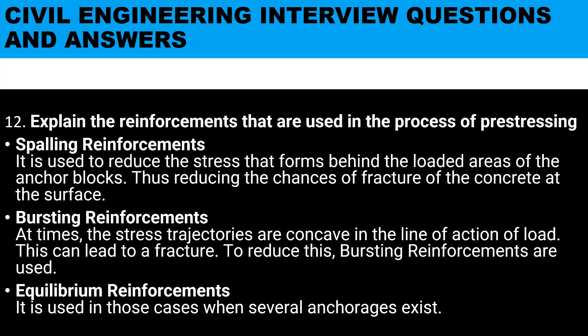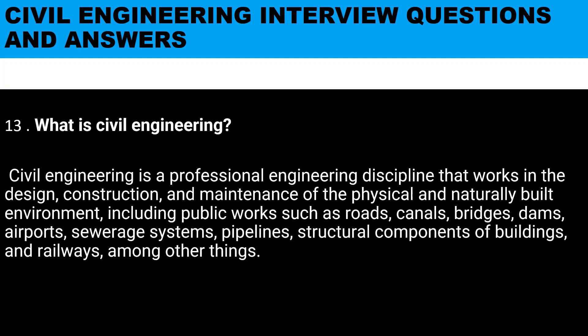Question twelve: explain the reinforcements used in the process of pre-stressing. We have spalling reinforcement — it is used to reduce the stress that falls behind the loaded areas of the anchor blocks, thus reducing the chances of fracture of the concrete at the surface. We have bursting reinforcement — at times stress concentrations are conveyed in the line of action of loads, which can lead to fracture; to reduce this, bursting reinforcement is used. We also have equilibrium reinforcement, which is used in cases where several anchorages exist.